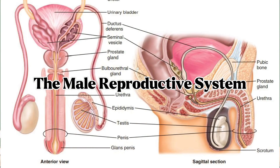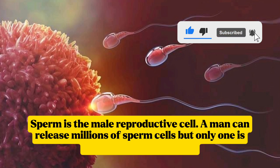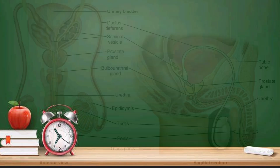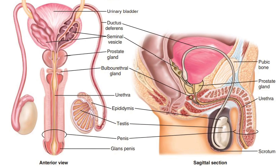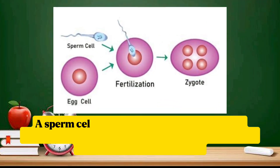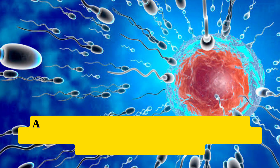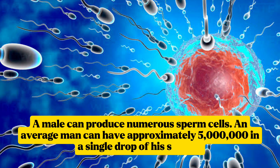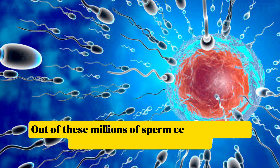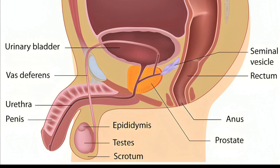The male reproductive system: sperm is the male reproductive cell. A man can release millions of sperm cells, but only one is needed for fertilization. The male reproductive system is made up of several organs including the testes, ducts, accessory glands, and penis. It is specifically responsible for producing sperm cells and hormones. An average man can have approximately 5 million sperm cells in a single drop of semen, but only one is needed to fertilize an egg cell.